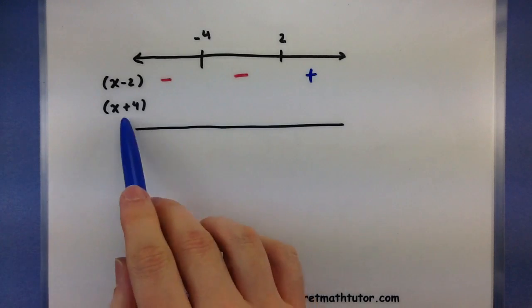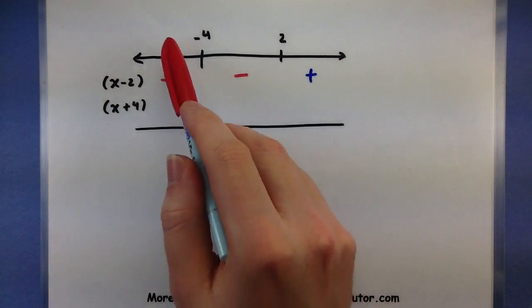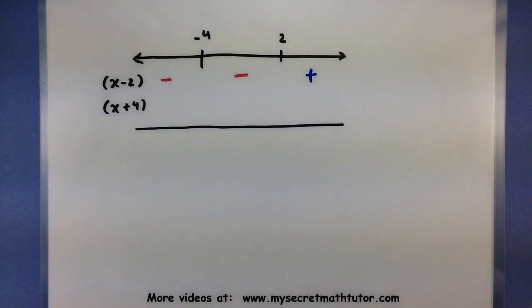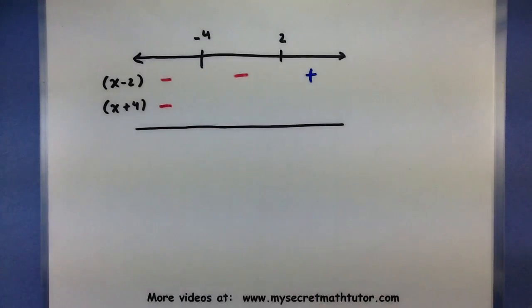Alright, let's do the same thing for our second factor, and then we'll start putting this information together. So choosing that point in the first interval, like a negative 5, plugging it in, negative 5 plus 4 is a negative 1, negative.